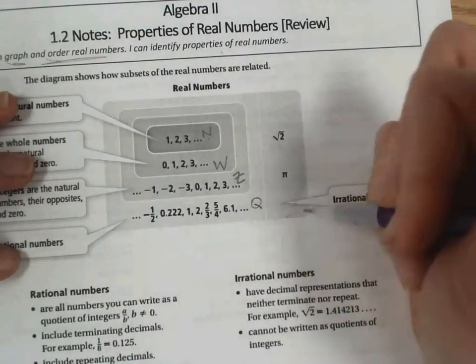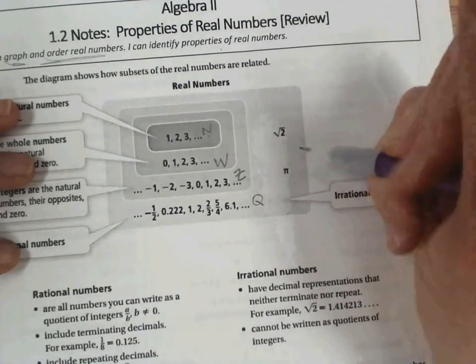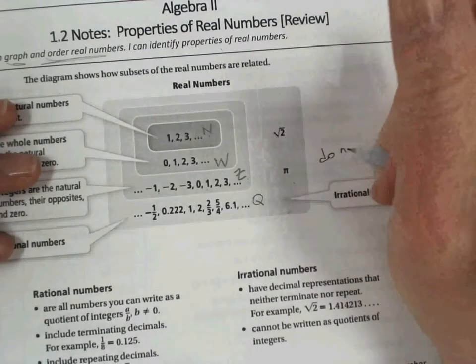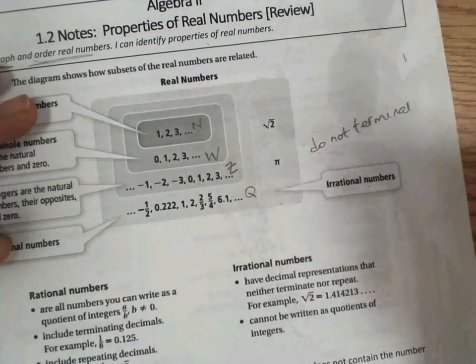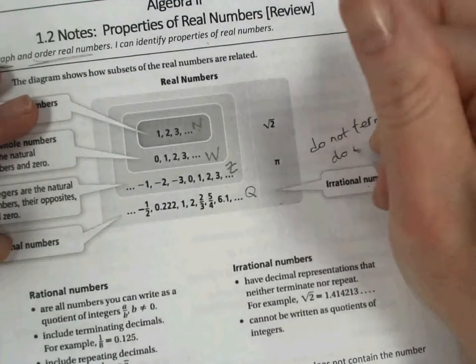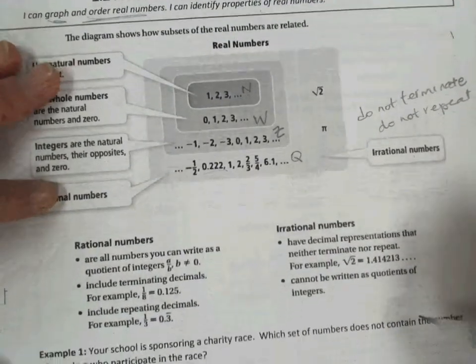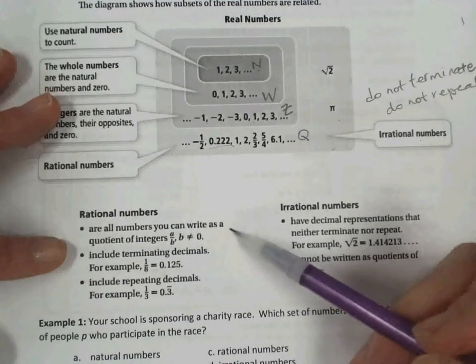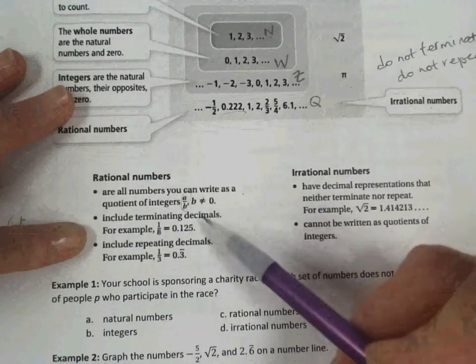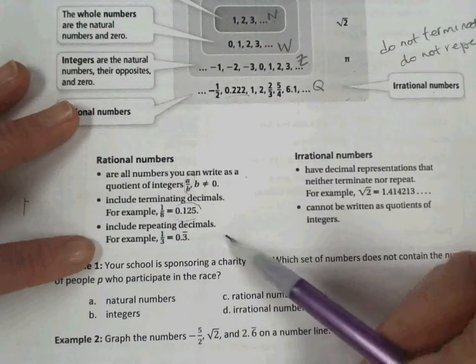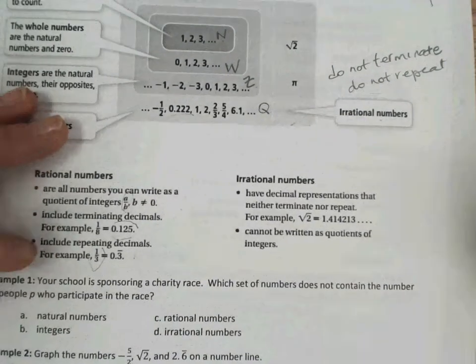And then on the other side of the Venn diagram are the irrational numbers. You notice there's not overlap in those two sections. Irrational numbers are numbers that do not terminate and do not repeat. So maybe make a note of that. Do not terminate, meaning they do not end. There is no end to the decimals here. Do not terminate and do not repeat. There is no pattern, as there is here in the 0.2 repeating. So rational numbers are all numbers you can write as a quotient of integers. A over B, where B does not equal 0. They include terminating decimals, such as 1 eighth or 0.125. And they include repeating decimals. For example, 1 third can be written as 0.3 repeating.